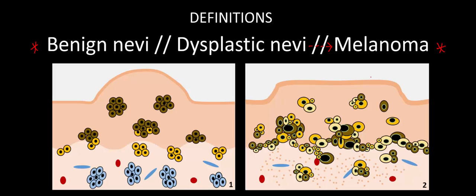To do that, I'm going to bring up two cartoon images. The image on the left is a cartoon histological slice of a benign nevus, and on the right we have a cartoon histological slice of a malignant melanoma. Before we talk about the specifics, I want to orient you to what you're looking at. Here I'm highlighting the dermal-epidermal junction. Above it is the epidermis in darker tan, and below it is the dermis in lighter tan, which also contains blood vessels highlighted with red and blue circles.